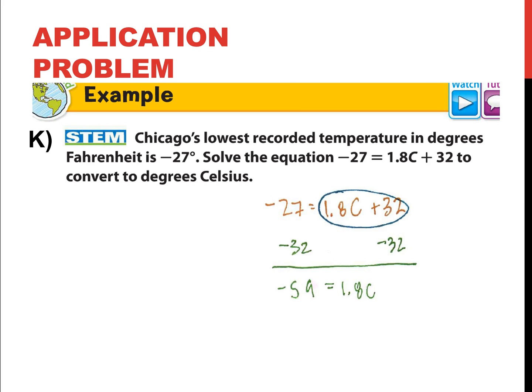Now I just divide by the coefficient of c, which is 1.8. 59 divided by 1.8 is 32, negative 32 rather, and 7 repeating. That's negative 32.7 with the bar on top. So I just write that with a bar. It's more exact. If you want to write negative 32 and 7 ninths degrees, that's even more exact.